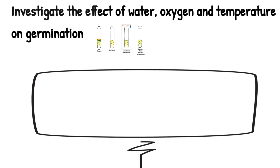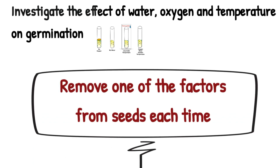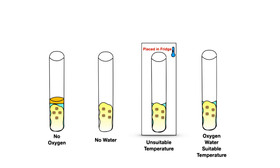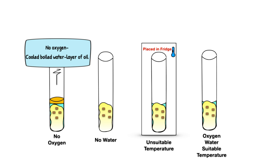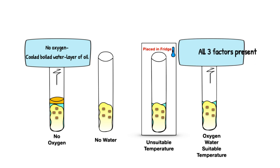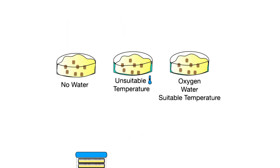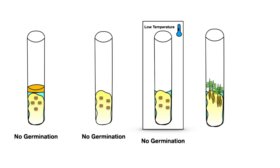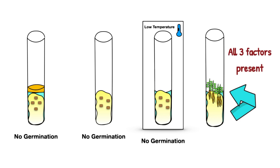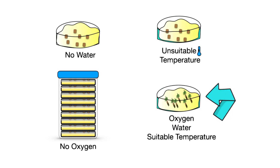The next practical is germination — investigating the effect of water, oxygen, and temperature on germination, because each of those three factors are essential. Each time you're going to remove one of the factors from the seeds, and the seeds you will use are again radish seeds. Use cotton wool and radish seeds and remove each factor each time: no oxygen — cool boiled water with a layer of oil; no water; then put seeds in the fridge for an unsuitable temperature; and the last one gets all three factors. You could have an alternative setup using petri dishes, but instead of cool boiled water and a layer of oil, you use an anaerobic jar. The results are as expected — germination will only take place in the container where all three factors were present.